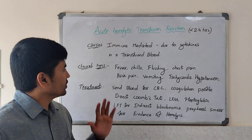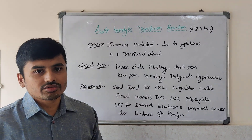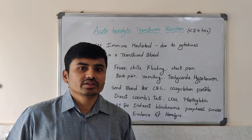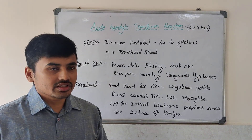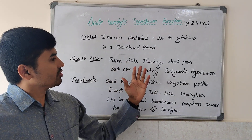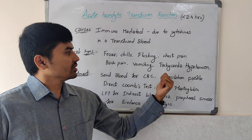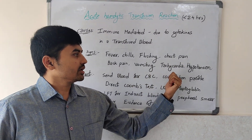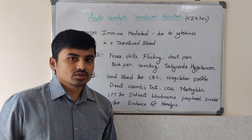The clinical signs of acute hemolytic transfusion reaction are: fever, chills, flushing, chest pain, back pain, vomiting, tachycardia, and hypotension.